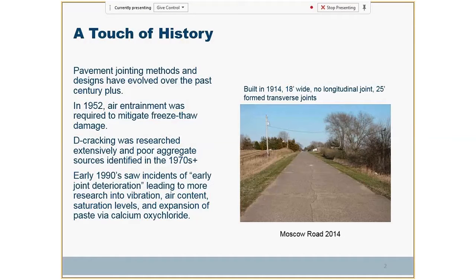Just a little bit of history — we've been building concrete pavements around this country for many years. We started our first ones in the early 1900s in Iowa. Right out of the gate, we really wanted to understand more about concrete pavement joints. Our original pavements we didn't join; they kind of did their own thing. This happens to be a county road over in eastern Iowa, still there, built in 2014 by prisoners from the local prison — one of the first times we really had record of using joints.